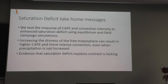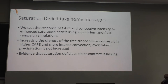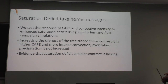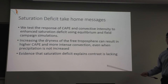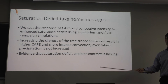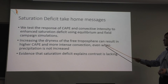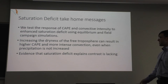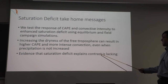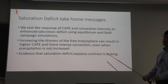Saturation deficit take-home messages: we test the response of CAPE and convective intensity to enhanced saturation deficit using equilibrium and field campaign simulations. Increasing the dryness of the free troposphere can result in higher CAPE and does result in more intense convection, even when precipitation is not increased — this is very different from the two previous cases. Evidence that saturation deficit explains the land-ocean contrast in lightning is still lacking.